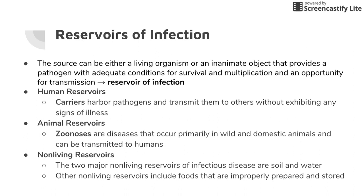There are different kinds of reservoirs: human, animal, and non-living. Humans are the principal living reservoir for human diseases. A lot of people harbor different pathogens and transmit them directly and indirectly to other people. People with signs and symptoms of the disease may also transmit it. These are called carriers — they harbor pathogens and transmit them to somebody else without showing any signs of illness.